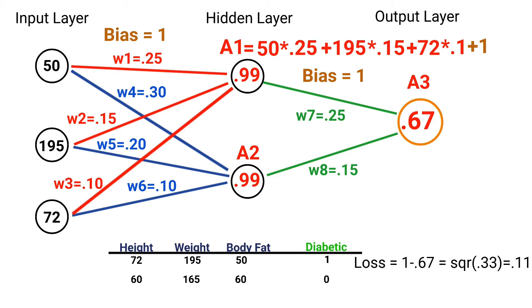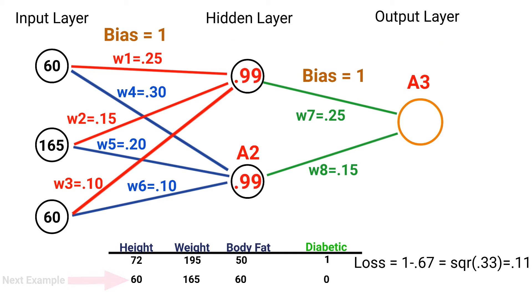So now that we've calculated the loss for the first example in our data set, the next thing to do would be to move on to the next example in our data set. We would then substitute those values into our input layer, and then calculate our activations the same exact way all over again. And this would give us a final output, again, of 0.67. We would then calculate our loss, which would be 0 minus 0.67 squared, which gives us a final value of 0.2. Now that we've finished processing all of our training examples, the next thing to do would be to calculate our total loss by simply adding the losses from both our training examples. So 0.11 plus 0.2 equals 0.31.